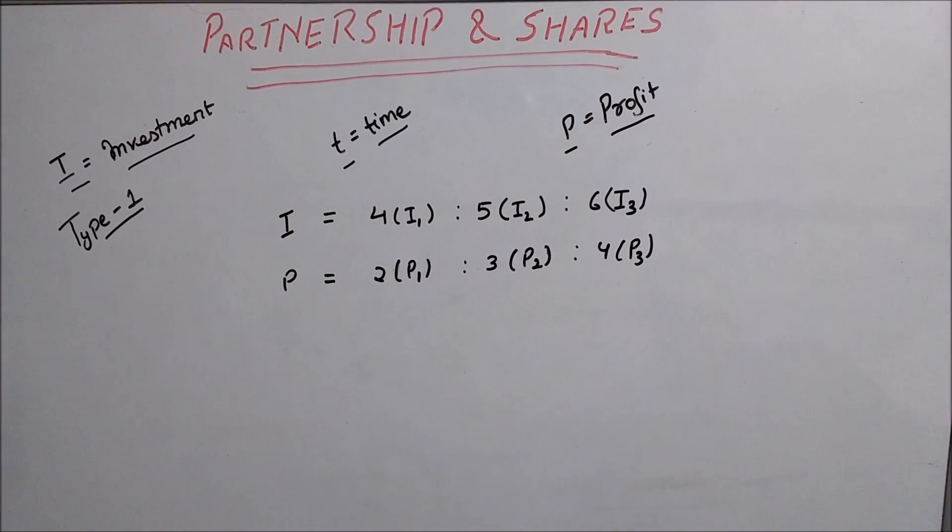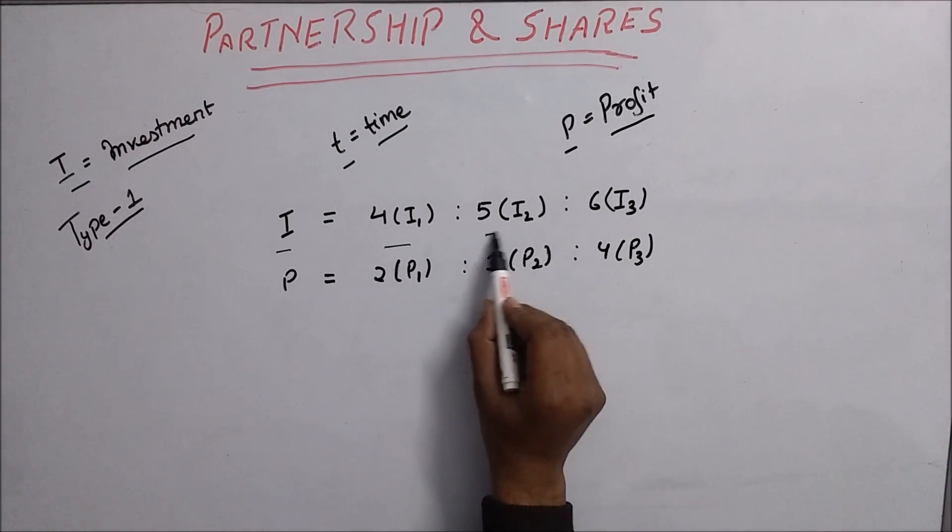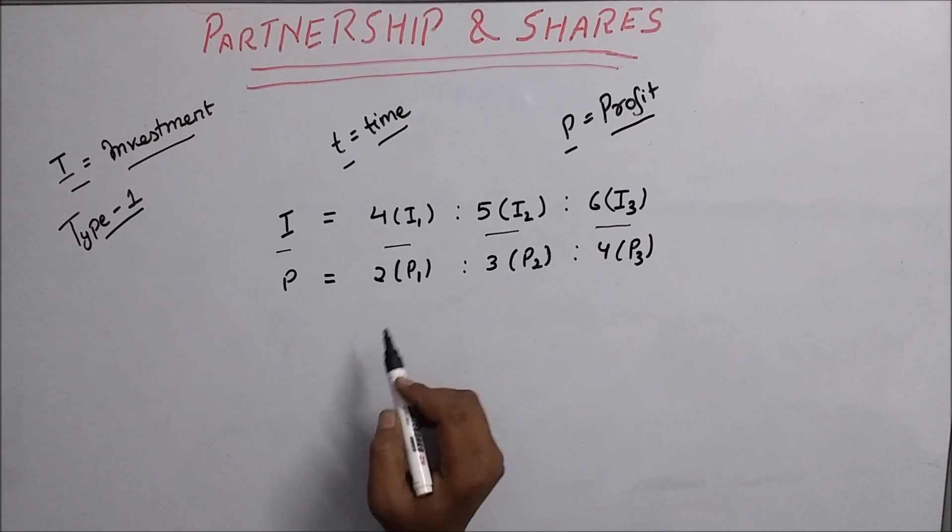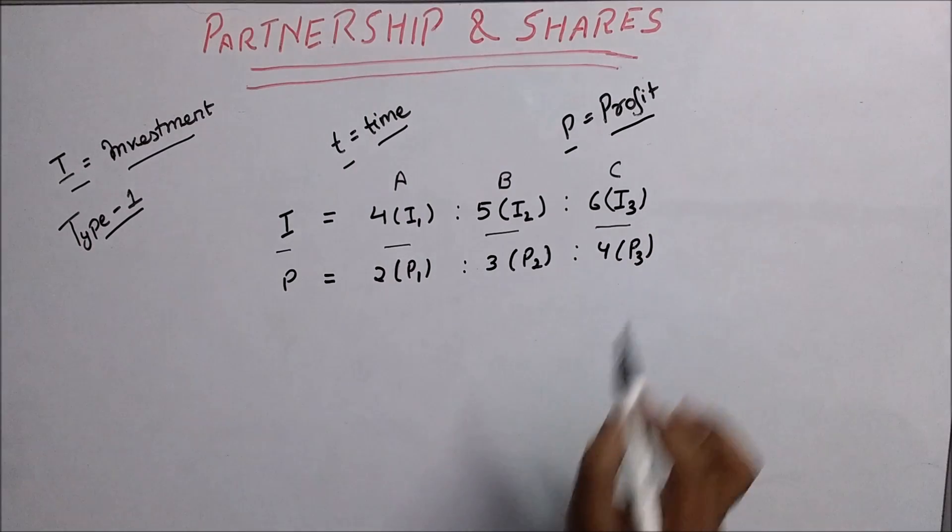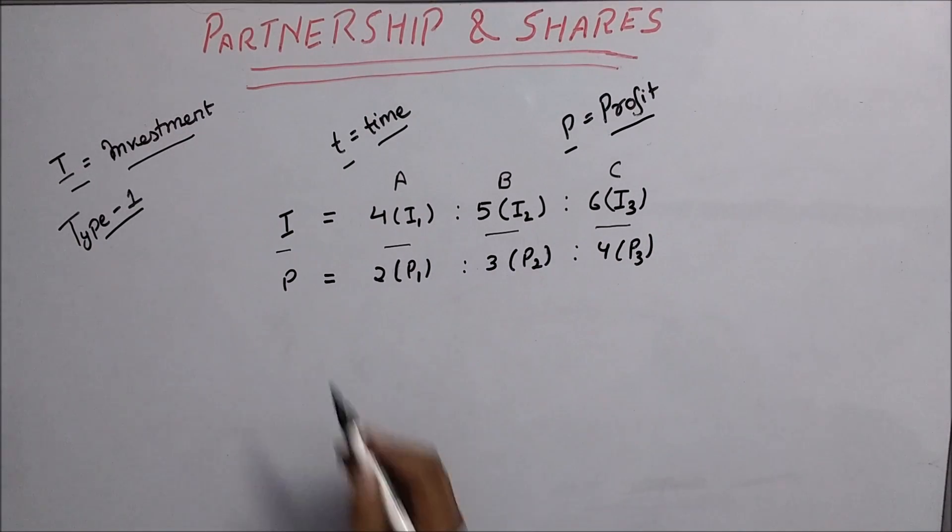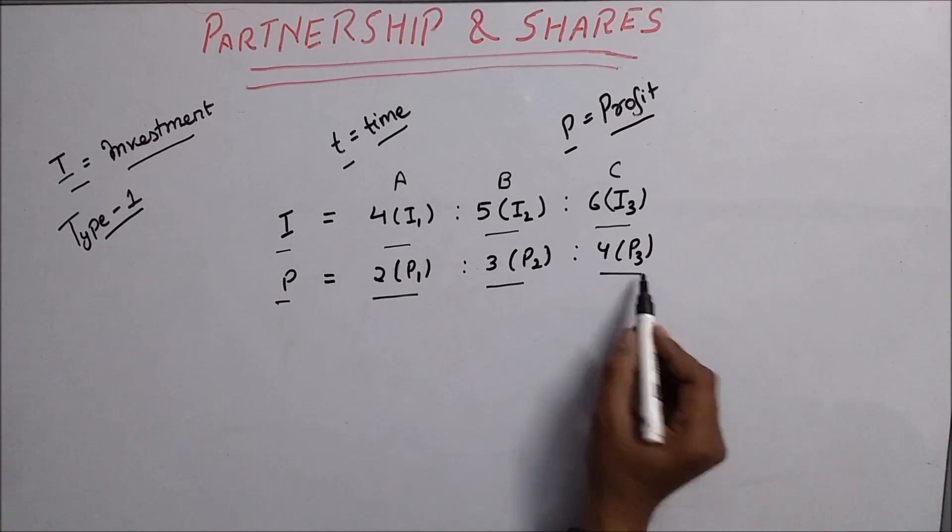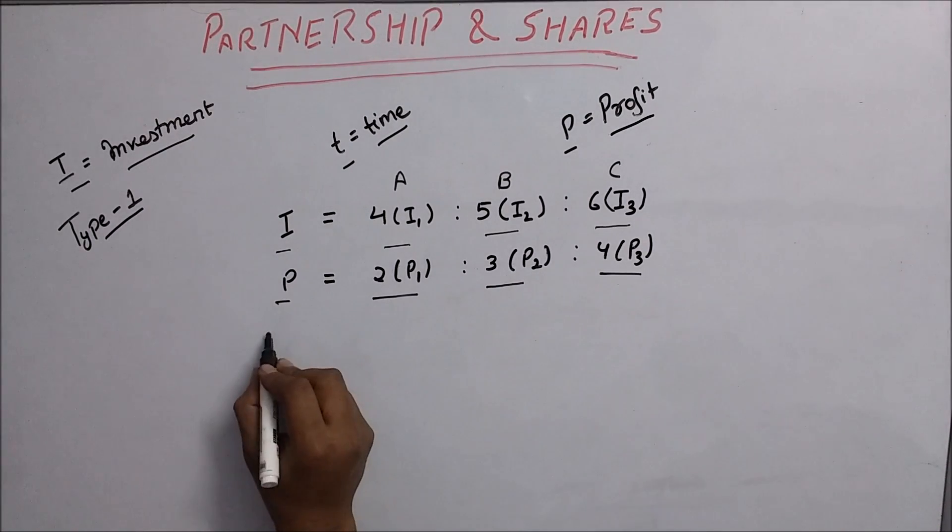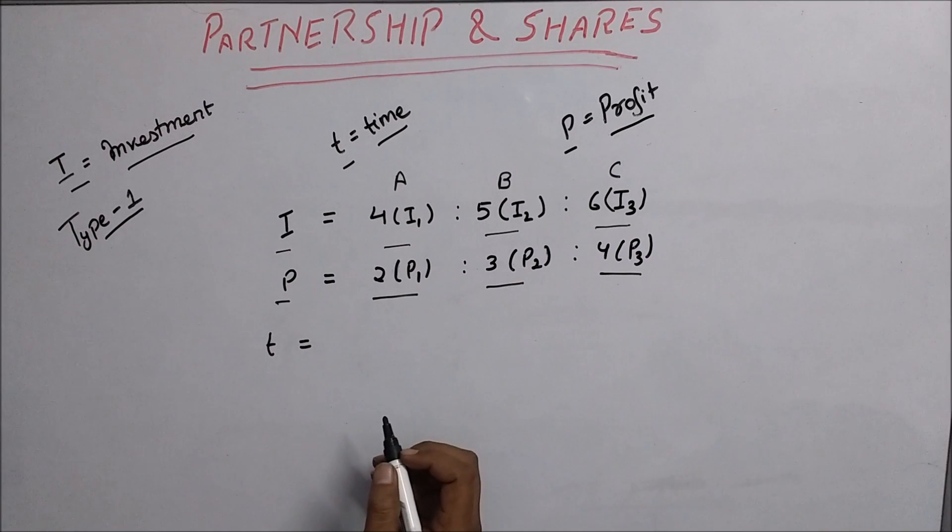Now there is a question in which investment is given in ratio for A, B, and C (three partners), and profit is given in this ratio, and we need to calculate time for which they invested.